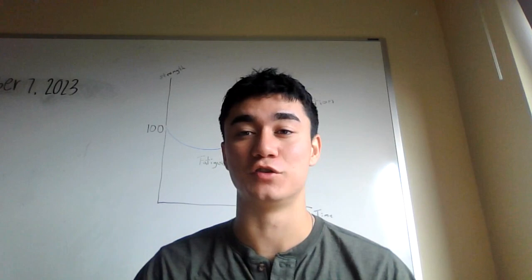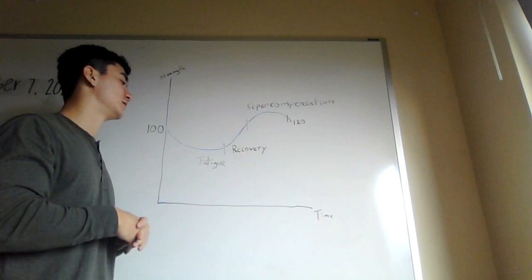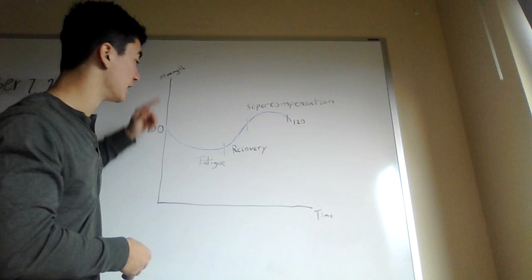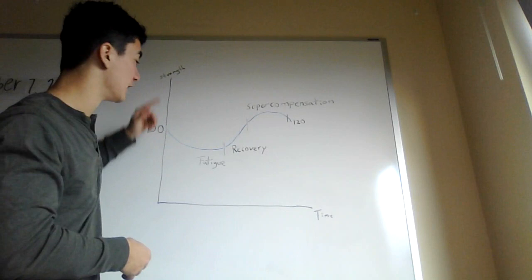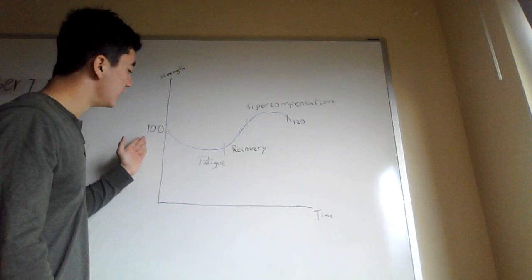So like I mentioned earlier, I have a visual representation of a training cycle which is right behind me. So this training cycle, our x variable will be time, our y variable will be strength, and our initial starting max strength will be 100 pounds. And today I'll use the example of a max barbell bench press being 100 pounds.